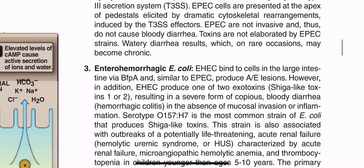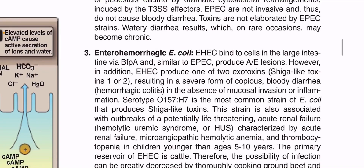BFPA, or Bundle-Forming Pilus, is involved in colonization. When EHEC produces one of two exotoxins — Shiga-like toxin 1 and Shiga-like toxin 2 — this results in a severe form of disease.